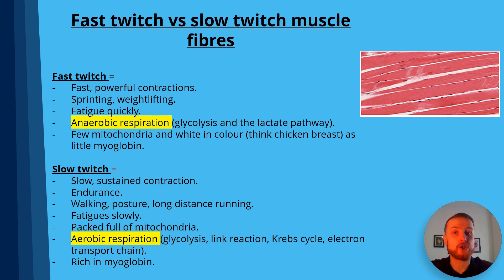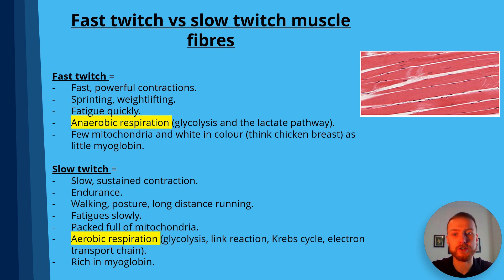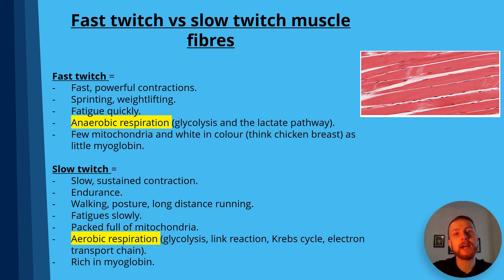Slow twitch muscle, on the other hand, is slow and sustained — think of endurance events like marathons. This type of muscle fatigues slowly and is packed full of mitochondria so that aerobic respiration can take place. In aerobic respiration, glycolysis occurs in the cytoplasm, but then the link reaction, Krebs cycle, and electron transport chain happen in the mitochondria. Slow twitch muscle fibre is rich in myoglobin.